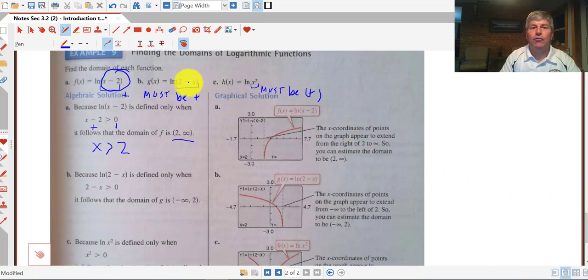In b, the natural log of 2 minus x. Again, the natural log here, this must be positive. So 2 minus x has got to be greater than 0. So we get x has got to be less than 2 in interval notation from negative infinity to 2. And here is our graph of our function if we would have done that graphically.